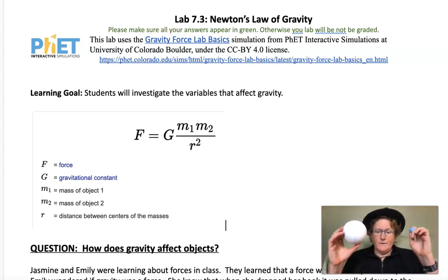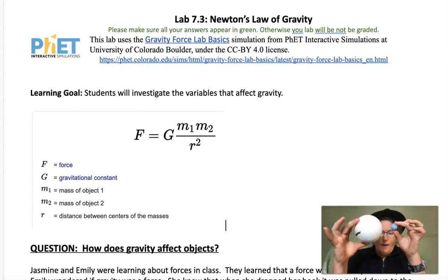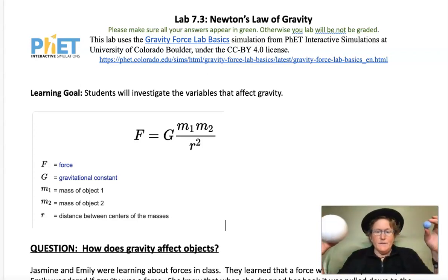And remember, it's divided by their distance. So when they're closer together, the gravitational force is stronger. When they're further apart, the gravitational force is weaker.